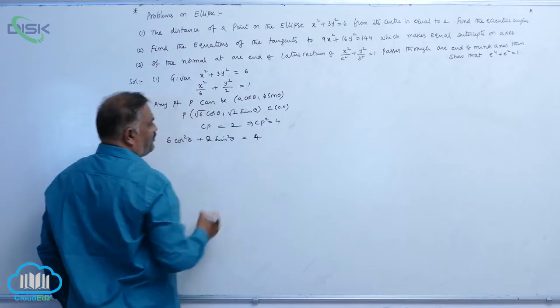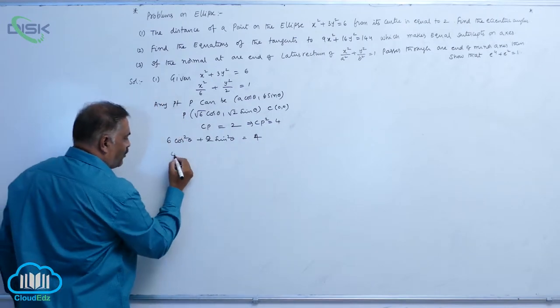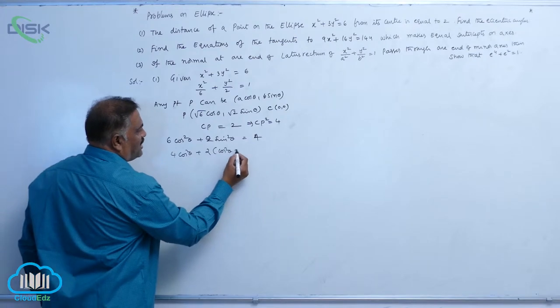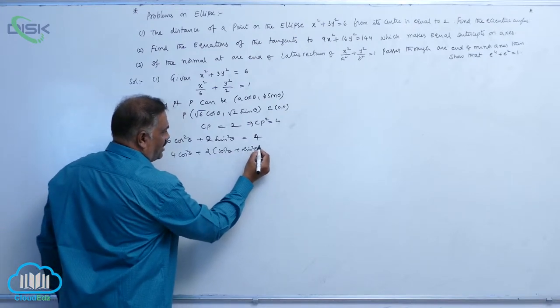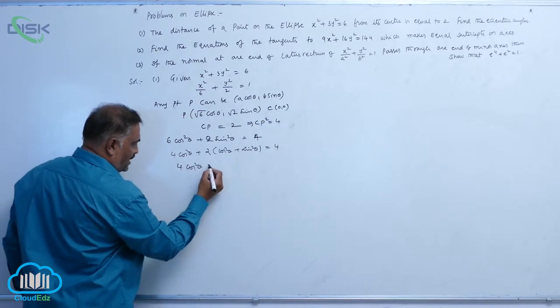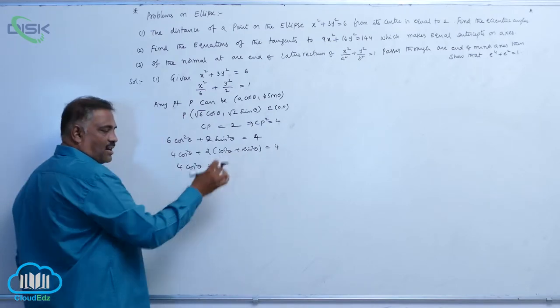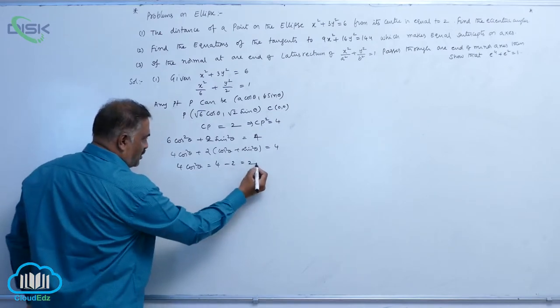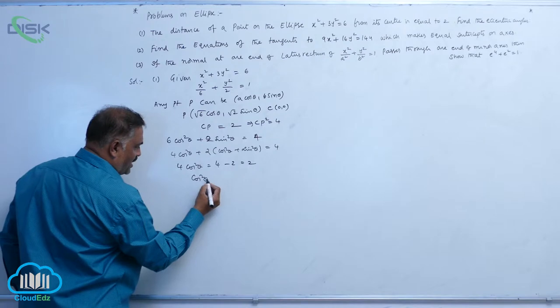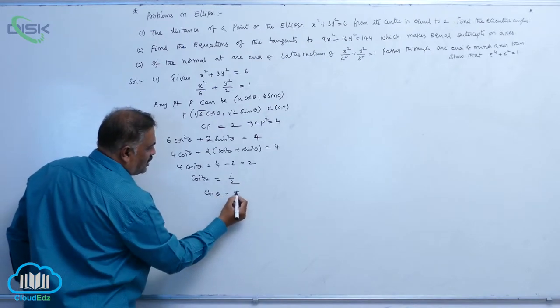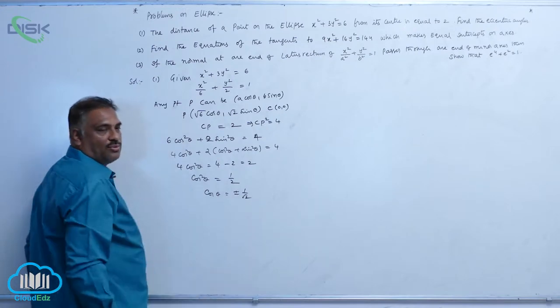Now distance between these two: 6 cos squared theta plus 2 sin squared theta is equal to 4. Take 4 cos squared theta plus 2 into cos squared theta plus sin squared theta equal to 4. 4 cos squared theta is equal to - because cos squared theta plus sin squared theta equal to 1 - 4 minus 2 equal to 2. Cos squared theta equal to 1 by 2, cos theta is equal to plus or minus 1 by root 2.